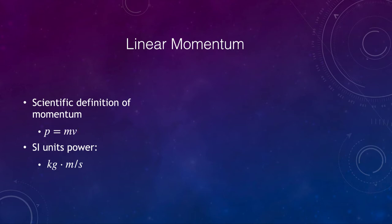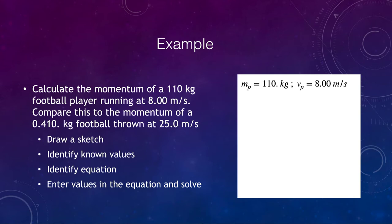Let's look at a quick example. We're going to calculate the momentum of a football player at 110 kilograms running at 8.00 m/s. Let's compare this to the momentum of a football which is 0.410 kg thrown at 25.0 m/s. We're looking at different velocities between the two objects where the football has a higher velocity, and we're looking at the masses where the football player has a far higher mass than the football itself. Let's look at our knowns. We know that the mass of the player is 110 kilograms and their velocity is 8 meters per second, and we have the same information about the ball.